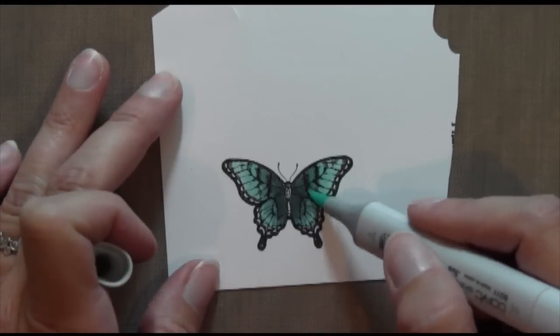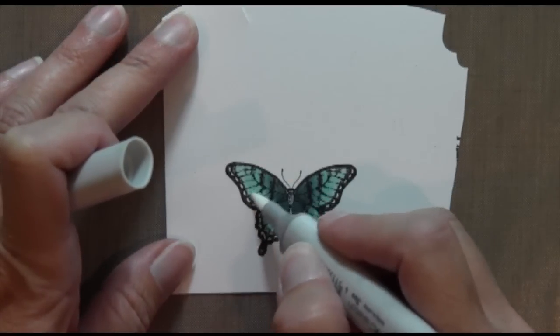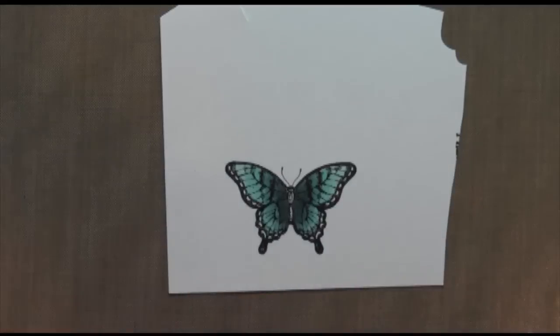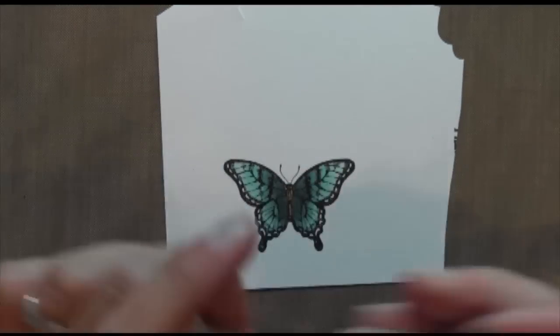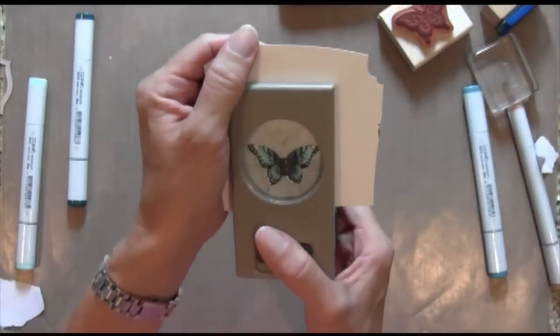And then what I ended up doing was taking a zero colorless blender right here. And I'm removing just a little bit of color on the outside just to make it pop a little bit more. And with the colorless blender you kind of have to wait a little bit before you can see the full effect of the color removal. So you have to be a little careful.